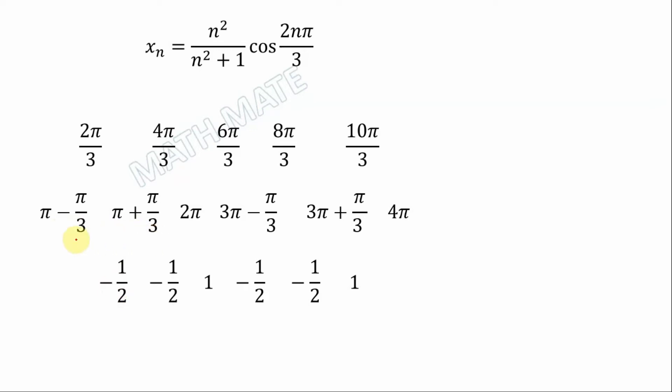The next one is also negative because it's in the third quadrant, and for 2π, cosine equals 1. For others, the values change periodically. So the values of cosine are negative 1/2, negative 1/2, 1, and that's repeated.